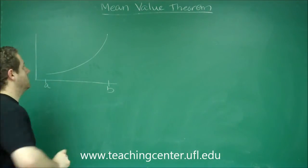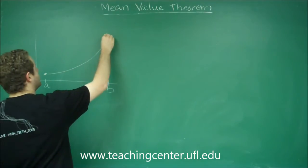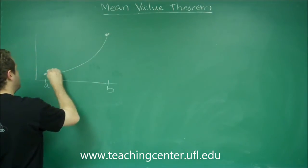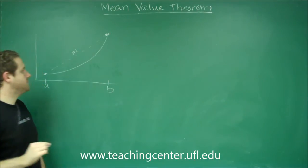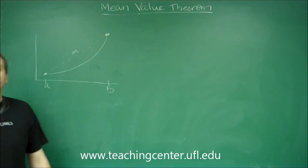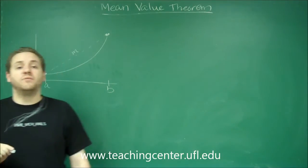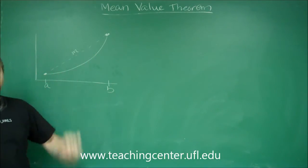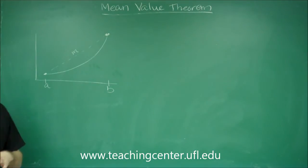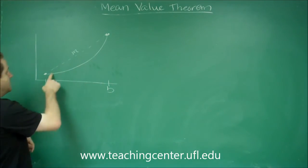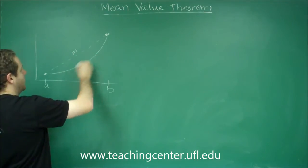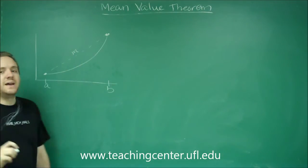then the slope between the endpoints of your function on the interval, so the slope of this dotted line, let's call it m, has to be the slope of some tangent line to this graph in between a and b. So the Mean Value Theorem guarantees, as long as this function is continuous and differentiable, that the tangent line on this curve somewhere is parallel to that dotted line.